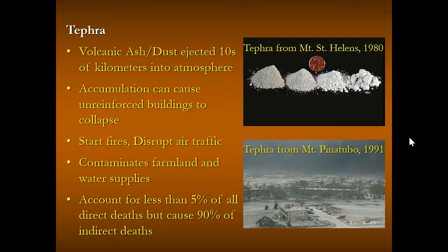Tephra can start fires and disrupt air traffic — when volcanoes erupt, air travel is often directed around them because tephra getting into engines can cause them to stall, and it has before. Tephra can also contaminate farmland and water supplies. It doesn't account for many initial deaths, but it can account for the vast majority of long-term deaths from a volcano because of the indirect problems it causes.